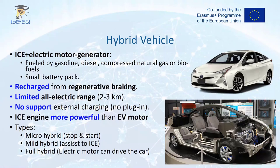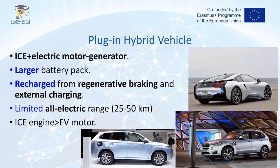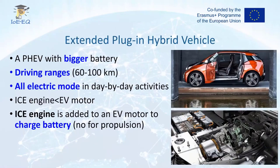The next evolution is the plug-in hybrid electric vehicle. Again we have an internal combustion engine and electric motor, but the battery here is a little bit bigger, so we can recharge it using regenerative braking or external charging. Because we have a larger battery, the range is also bigger — around 25 to 50 kilometers. A variation of plug-in hybrid electric vehicles is the extended plug-in hybrid vehicle, which has a bigger battery allowing daily trips in electric mode — around 50 to 100 kilometers. In this case the electric motor is bigger than the internal combustion engine, and the internal combustion engine is only used to recharge the battery, not for propulsion.